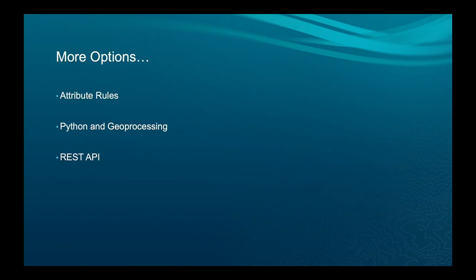There are also other ways to build utility network functionality: attribute rules, which are Arcade scripts that fire when edits take place; Python and geoprocessing for many tasks; and if all else fails, you can go directly against the REST API.